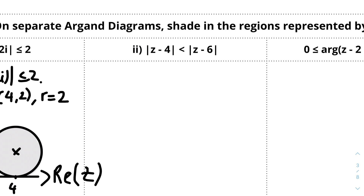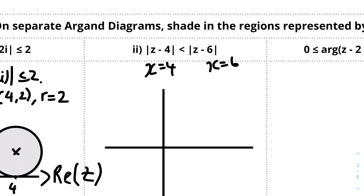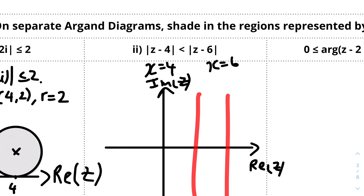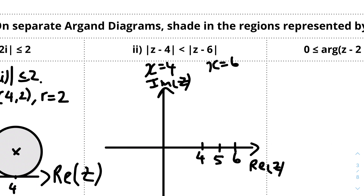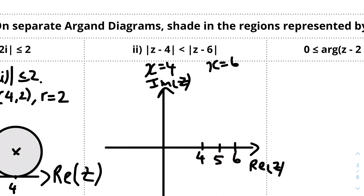Moving on to the next question: |z − 4| < |z − 6|. We know that |z − 4| represents the vertical line x = 4, because there's no imaginary unit attached — it's on the real axis. Similarly x = 6. The locus is a set of points equidistant to both, so the locus is the perpendicular bisector at x = 5. We use a dotted line because it's a strict less than symbol.